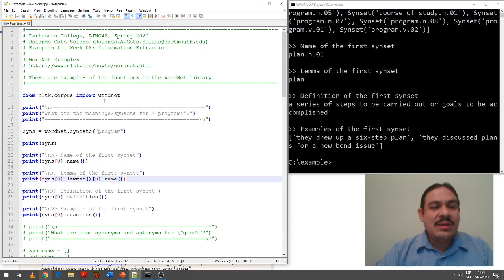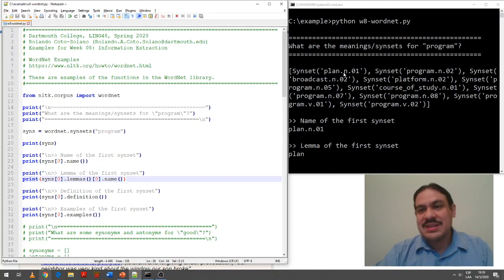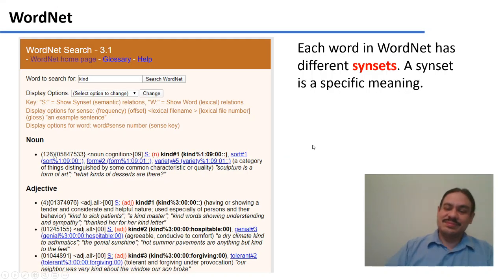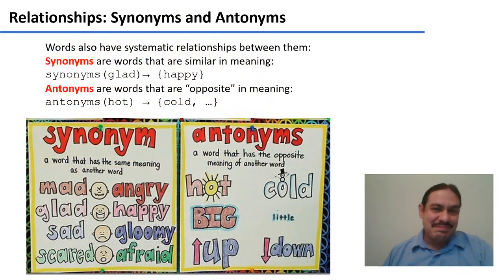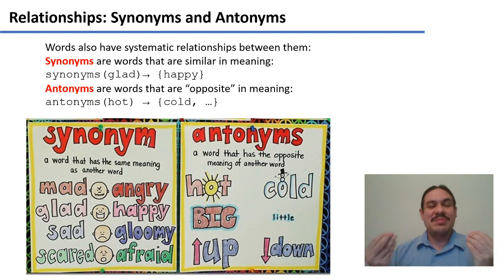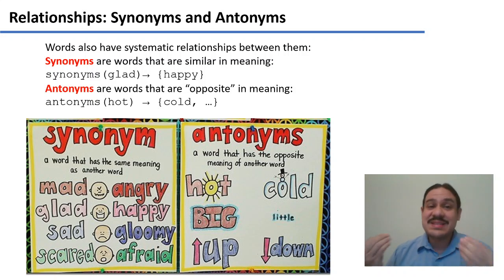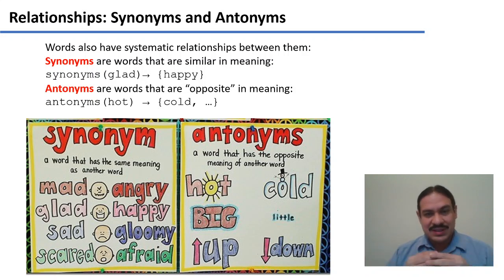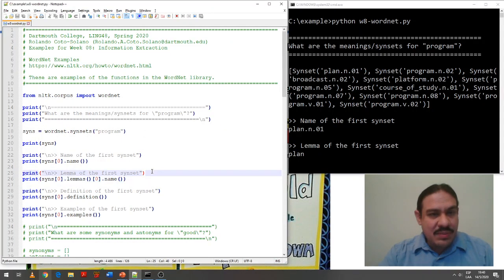As you can see, we can query WordNet to get the different meanings of a word — the different synsets it has. Words have systematic relationships between them, and I'm sure you remember this from primary school. One of the most basic relationships is that of synonyms — two words that are similar in meaning. For example, to be glad is very similar to to be happy — not exactly the same, but similar. To be hot, on the other hand, is the antonym of being cold; it's the opposite meaning.